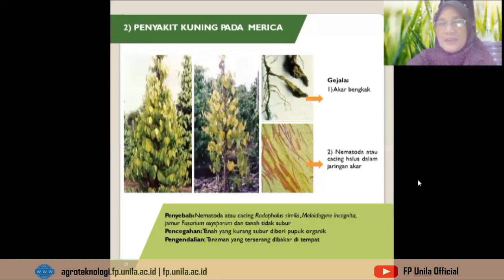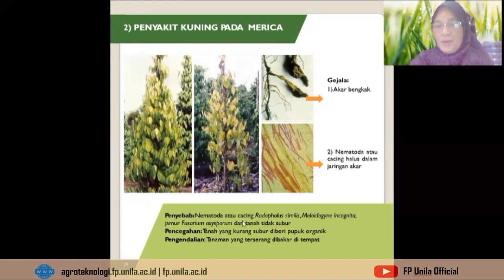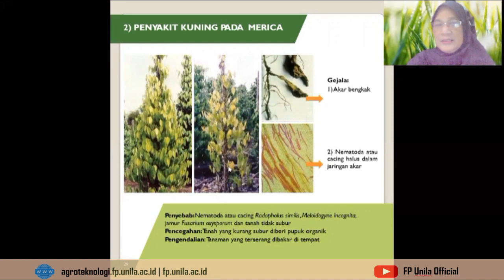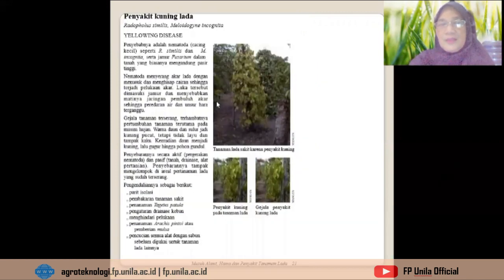Yang kedua adalah penyakit kuning pada merica. Gejalanya akarnya bengkak; nematoda atau cacing halus ada di dalam jaringan akar yang bengkak tersebut. Penyebabnya adalah nematoda Radopholus similis, Meloidogyne incognita, dan bersinergi dengan jamur Fusarium oxysporum dan tanah yang tidak subur. Tanaman yang telah terserang, tampak dari pencabutan akar dan ternyata ada gejala akar bengkak, harus dibakar di tempat.